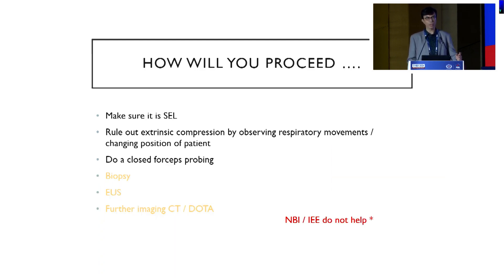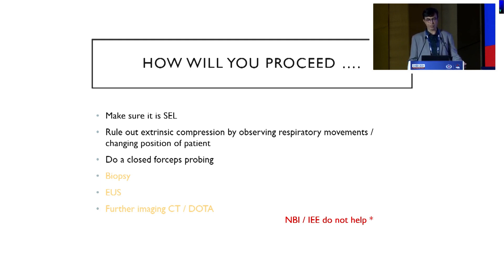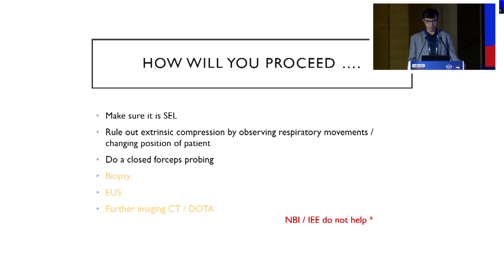So if you find an SEL on the table, how do you proceed? First thing is to ensure that this is an SEL. To do so, perform endoscopy with more care — try to rule out an extrinsic impression by observing respiratory movements, because an extrinsic impression will move differently than the luminal wall. You can also change the position of the patient. Then you should have a closed forcep in hand to do a probing maneuver. You can also resort to biopsy, EUS, and other things.